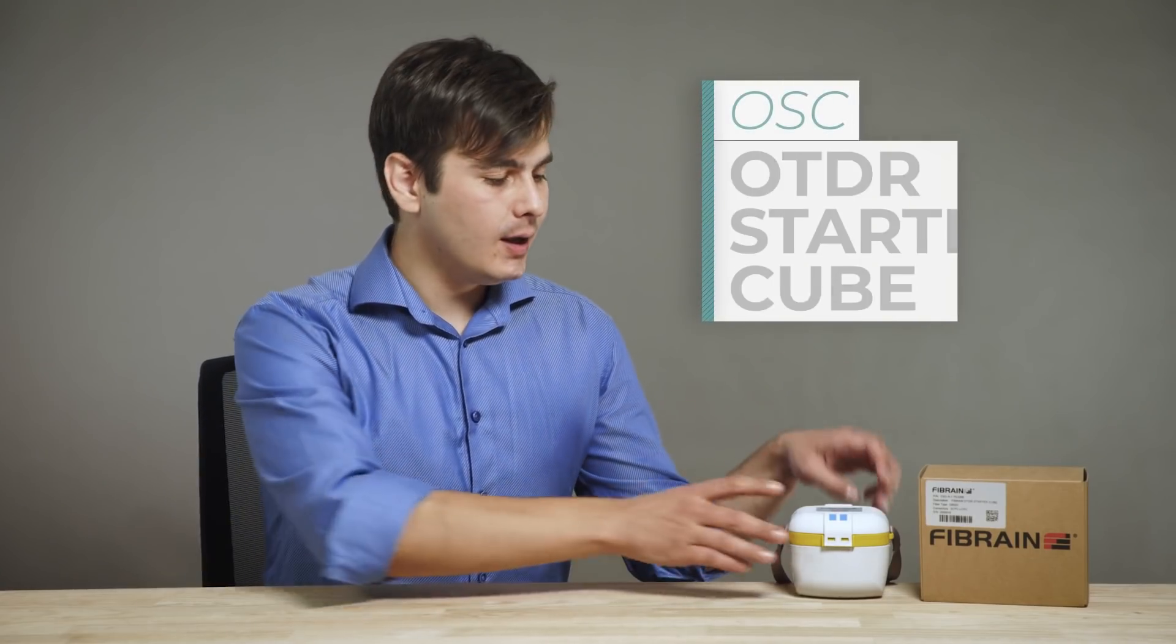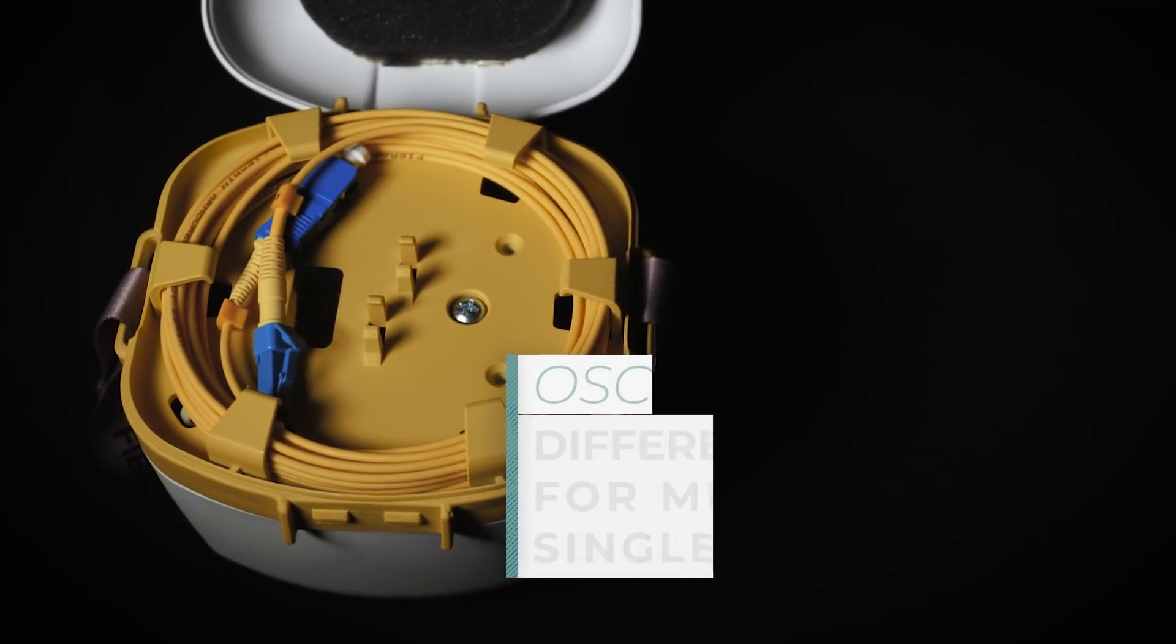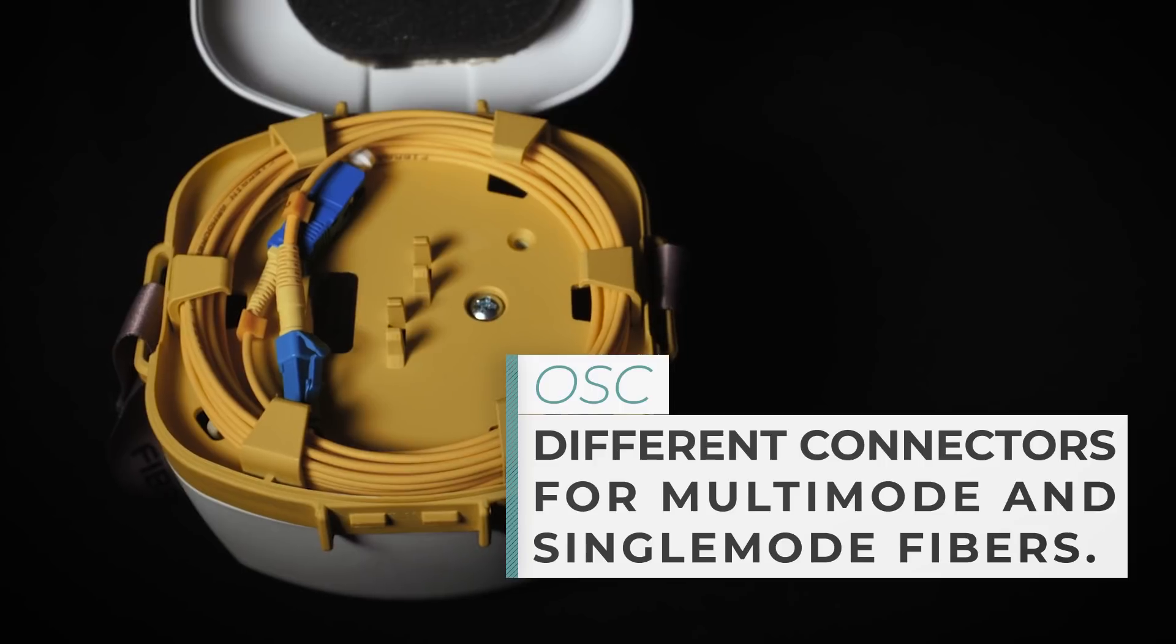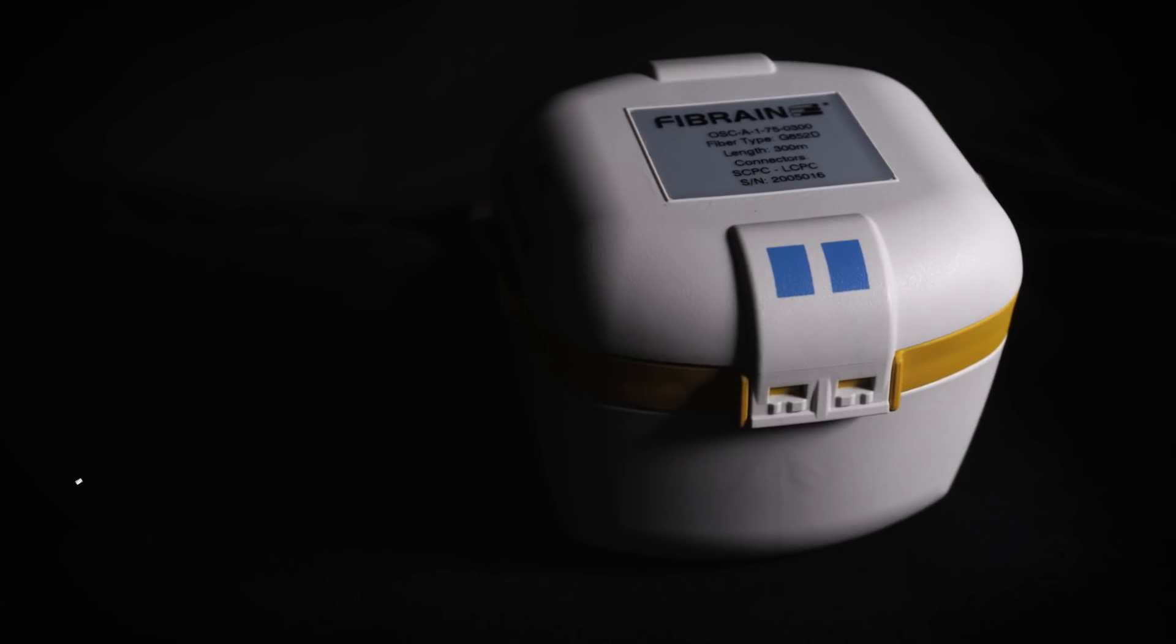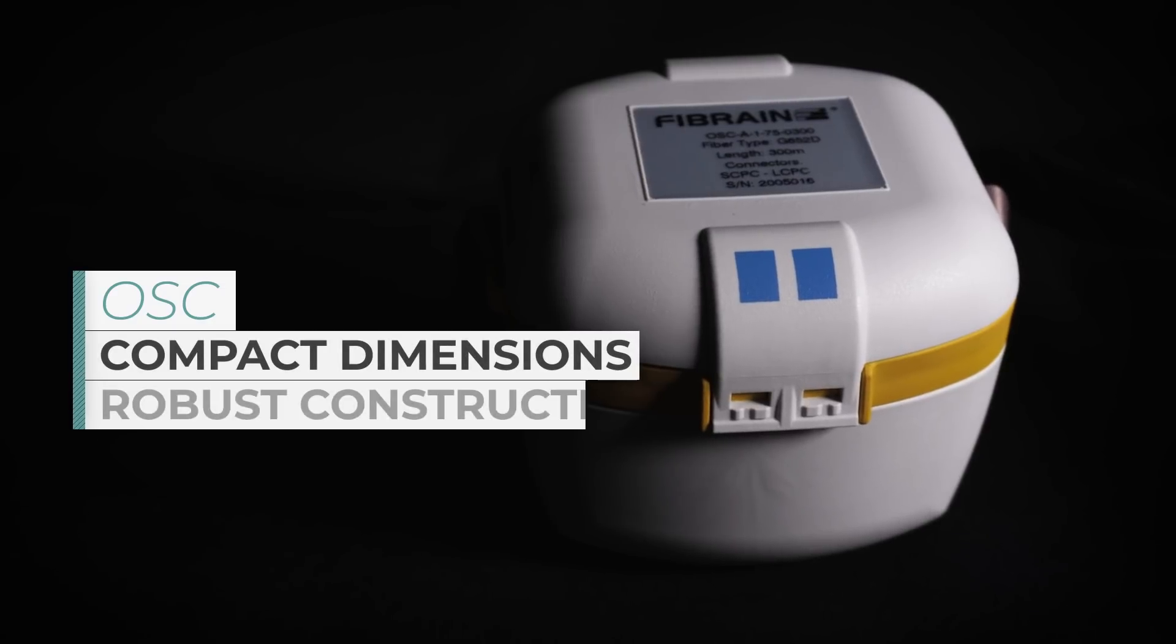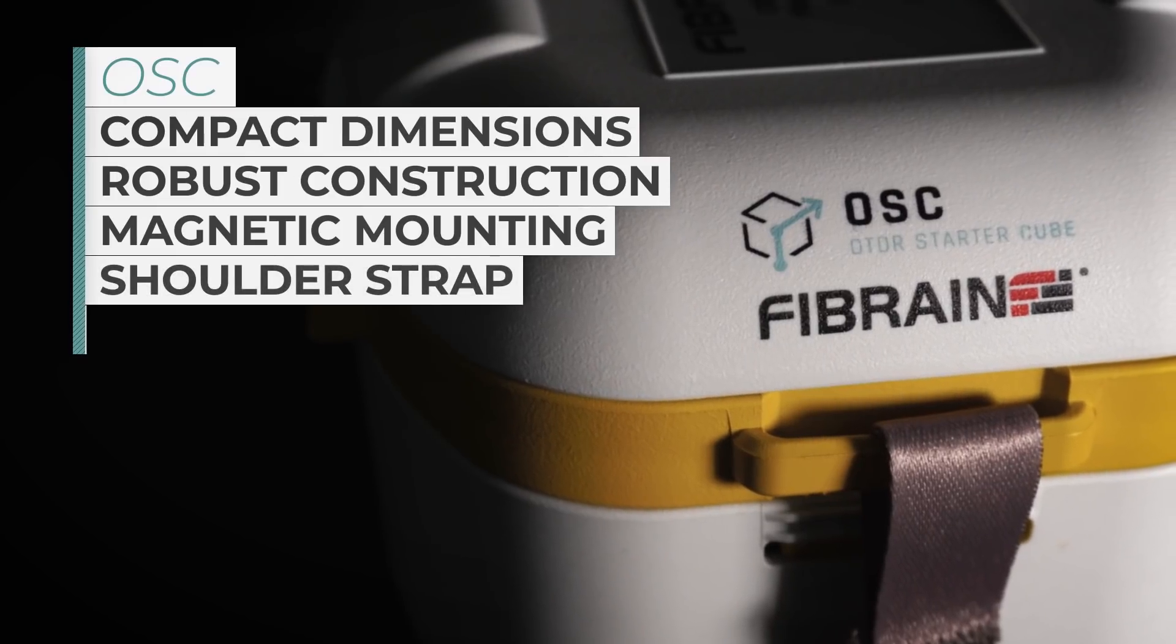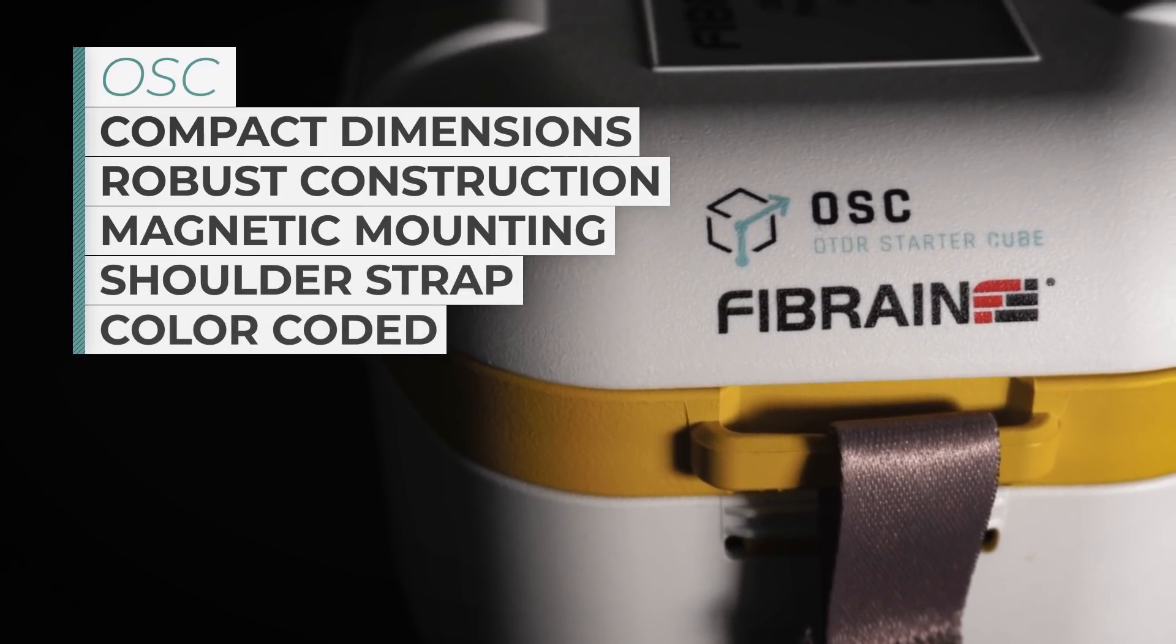From Fibrant accessories we have the OSC, an OTDR starter cube. It comes with different types of connectors for multimode and single-mode fibers. The cube has compact housing made of sturdy construction that is resistant to mechanical damages. It includes magnetic mounting, a shoulder strap and a color code for easy identification.